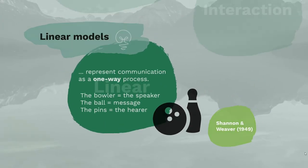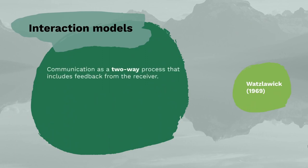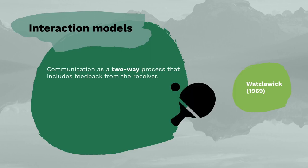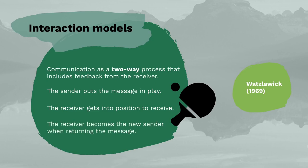Now let's move on to interaction models. Interaction models view communication as a two-way process that includes feedback from the receiver. Ping-pong is a good analogy: the sender puts the conversational ball in play, and the receiver gets into position to receive. The ball might appear straightforward yet have a deceptive spin, but by returning the ball, the receiver might switch roles and become the sender.